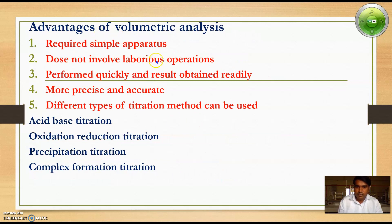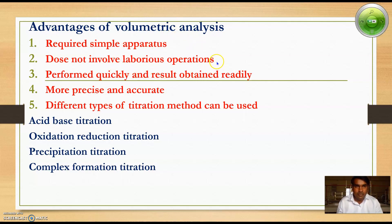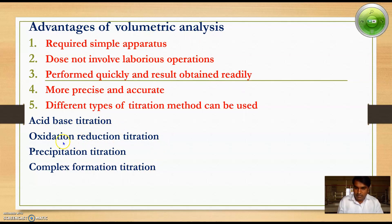Now the advantages of volumetric analysis. It requires simple apparatus like pipette, burette, volumetric flask, and burette stand. It does not involve laborious operations. It performs quickly and results are obtained very fast. This technique is more precise and accurate. Different types of titration methods can be used in volumetric analysis, such as acid-base titration, redox titration, precipitation titration, complex formation titration, and diazotization titration.